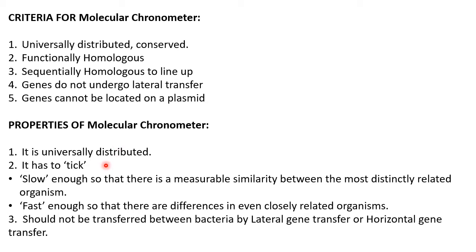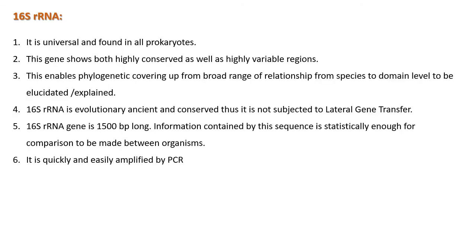The properties of a molecular chronometer are: it is universally distributed and conserved; it should tick slow enough so that there are measurable similarities between the most distantly related organisms, and fast enough so that there are differences even in closely related organisms. Third, it should not be transferred between bacteria by lateral or horizontal gene transfer.